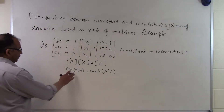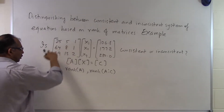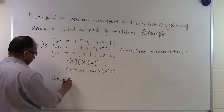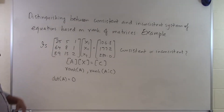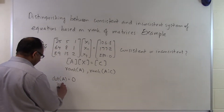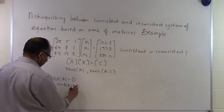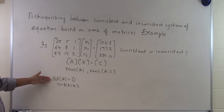Let's concentrate on finding the rank of A. Here A is a 3x3 matrix, so the largest square submatrix I can find is 3x3. The determinant of A is turning out to be 0. So if the determinant of A is 0, and that is the only 3x3 submatrix of A, that tells me the rank of A is less than or equal to 2.